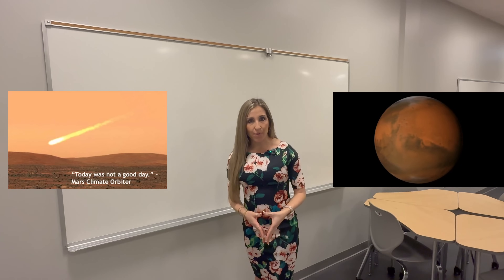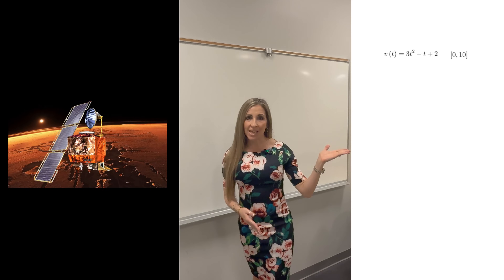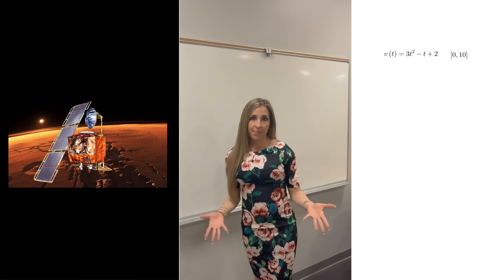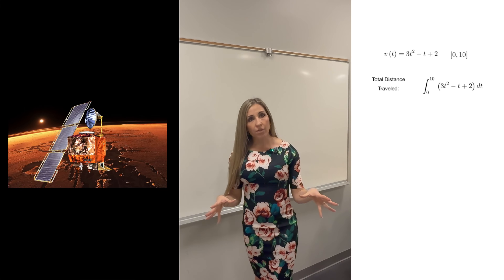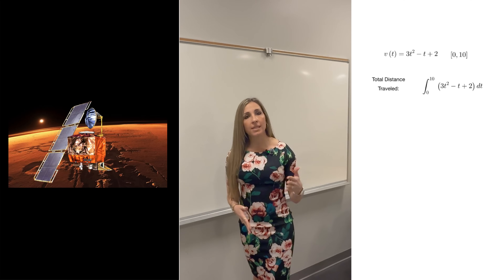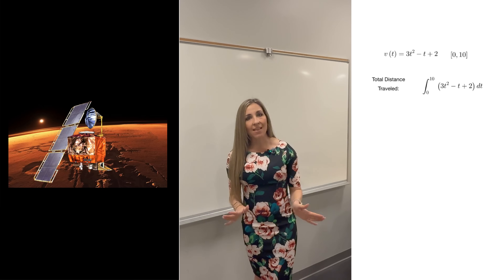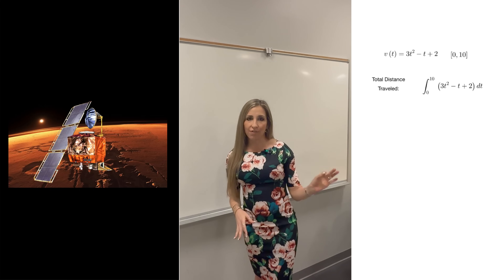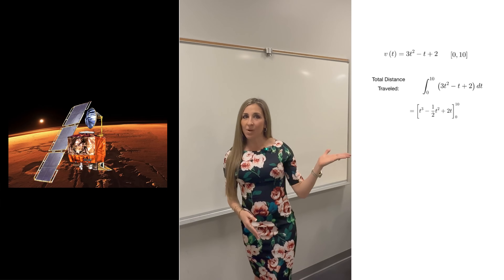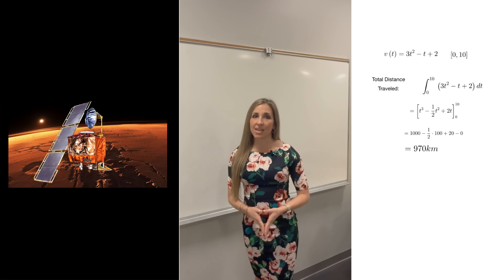We can illustrate this with an example. Suppose the velocity of a spacecraft is given by the function v of t, where v is measured in kilometers per second and t is time in seconds. To find the total distance traveled over the first 10 seconds, you take the definite integral from t equals 0 to t equals 10 of the velocity function. Since this particular function is always positive, we don't need to take the absolute value. The antiderivative is t cubed minus one-half t squared plus 2t, evaluated from 0 to 10, which gives us 970 kilometers.